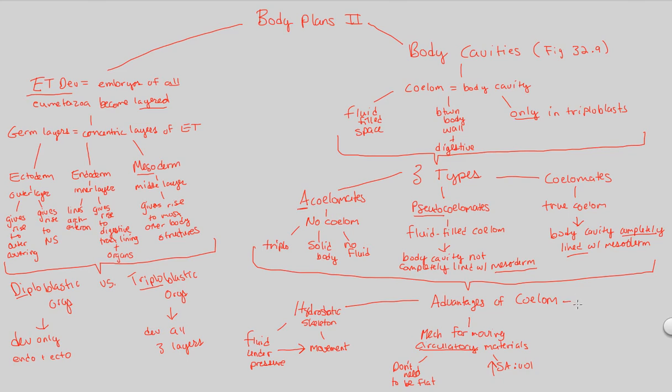Finally, the last thing in terms of the advantages is that a coelom enables internal organs. So things like your heart, your liver, your lungs, all things that are within you, organs, complex structures of animal kingdom, enables internal organs to grow and move. So your heart is a moving organ. Your lungs are moving organs. They don't just stay there. They actually have capabilities of moving within you independent of the outer body wall.